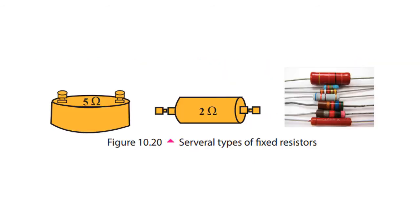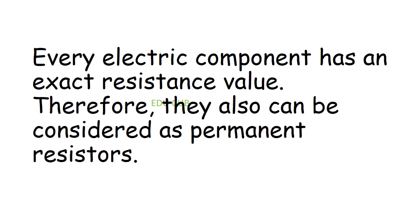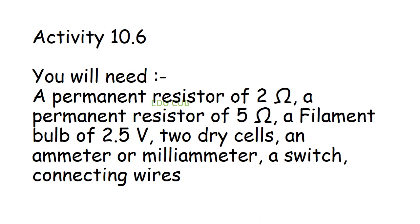There are resistors made to certain fixed values in the laboratory, known as fixed resistors. You can see several types of fixed resistors here. Every electric component has an exact resistance value and can be considered a permanent resistor. For the activity on permanent resistors, you will need a permanent resistor of 2 ohms, a permanent resistor of 5 ohms, a filament bulb of 2.5 volts, two dry cells, and an ammeter or milliammeter with connecting wires.